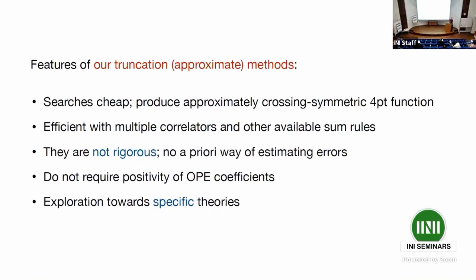Our truncation methods do something different. Searches are quite cheap but do not give rigorous bounds — they give an approximately crossing-symmetric four-point function. There is some difficulty in determining errors a priori, as systematic and numerical errors are hard to disentangle. But they are efficient with multiple correlators and additional sum rules, do not require positivity of OPE coefficients, and allow exploring towards specific theories. The idea is: give me a specific theory, I input as much information as I can, then determine the CFT data.